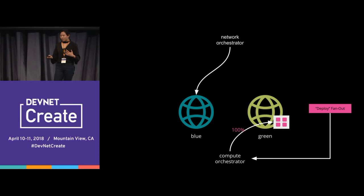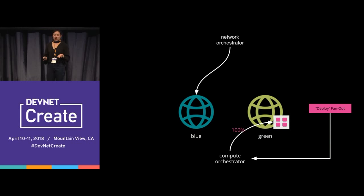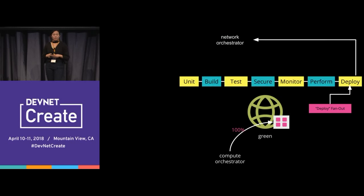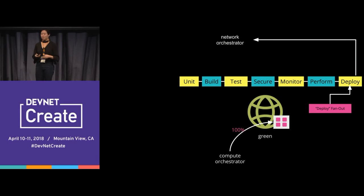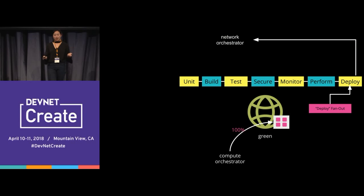Finally, we said 100% — let's go to green. We know it's stable; when we deploy workloads, we're not noticing any connectivity issues. We left the blue up for a while, as determined by our SLOs. Eventually, the deploy fanout returned to our original network pipeline — because now it's production ready — and told the network orchestrator to remove the blue network.